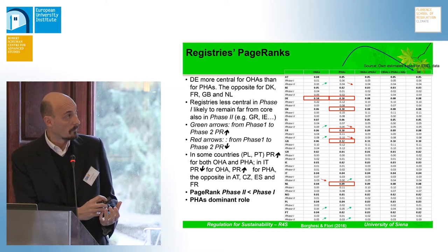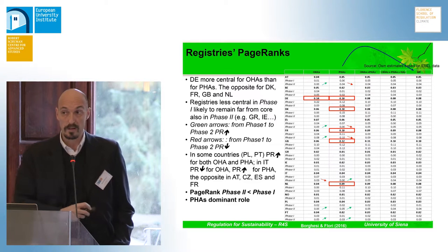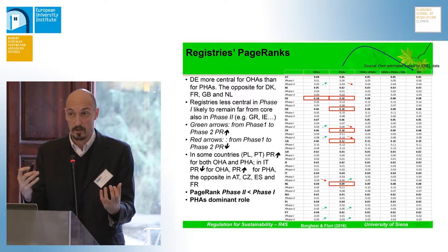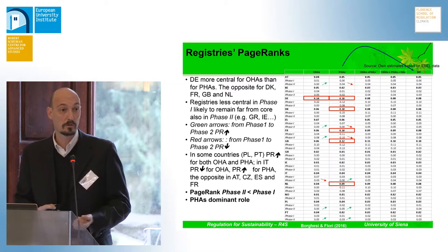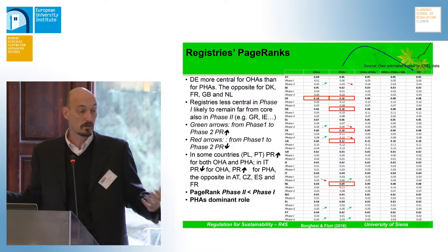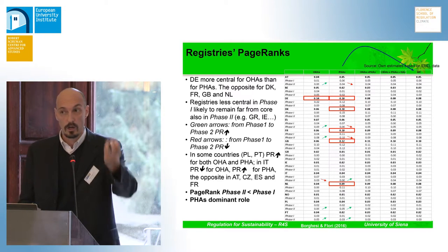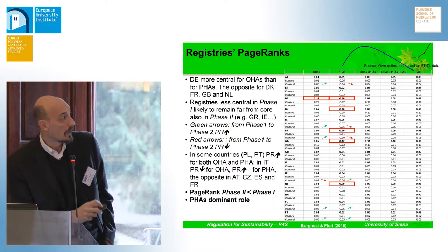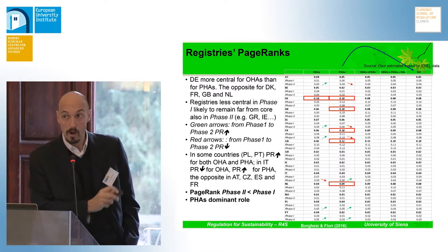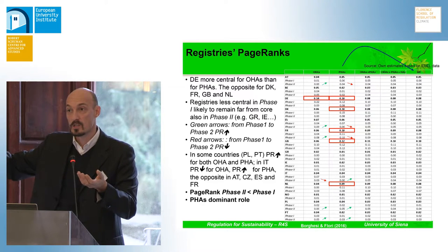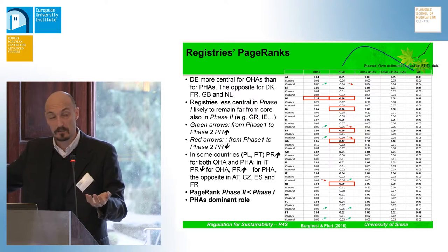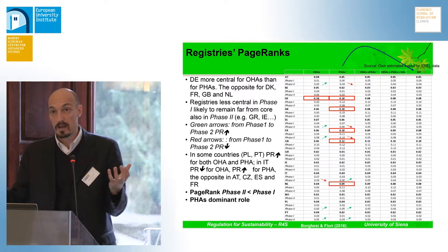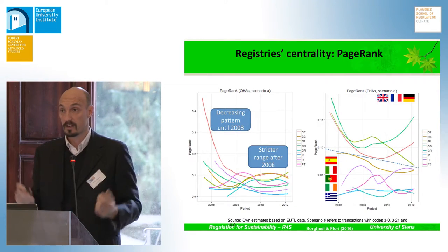What emerged in general is that the page rank decreased from phase one to phase two — less central nodes. This seems to suggest that the system became more homogeneous over time, with fewer very central nodes as we used to have at the beginning, which might reflect the simple extension of the EU ETS to additional countries, but also the fact that we no longer rely on a few hubs that played the dominant role at the beginning. In terms of account types, the PHA had a dominant role — you can see that by comparing the PHA column with those obtained by including additional accounts — OHA, government accounts, and all kinds of accounts — and you will see that the numbers are basically unchanged with respect to the PHA.